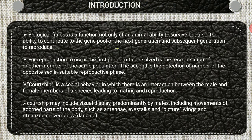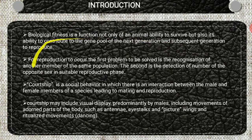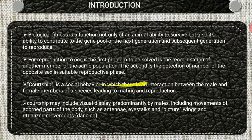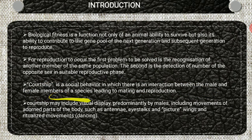Biological fitness is a function not only of an animal's ability to survive but also its ability to contribute to the gene pool of the next generation and subsequent generations. For reproduction to occur, the first problem to be solved is the recognition of another member of the same population. Second is the detection of a member of the opposite sex in a suitable reproductive phase. Courtship is a social behavior in which there is interaction between the male and female members of the species leading to mating and reproduction.